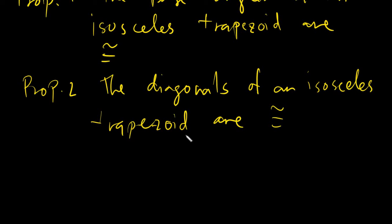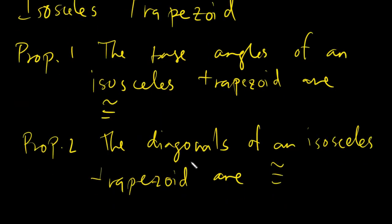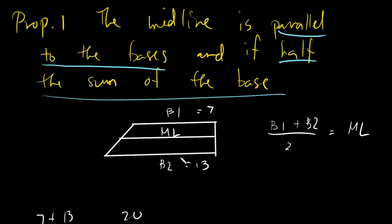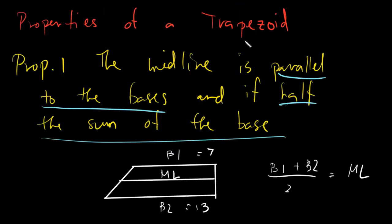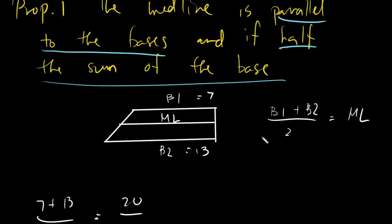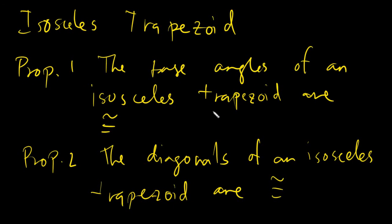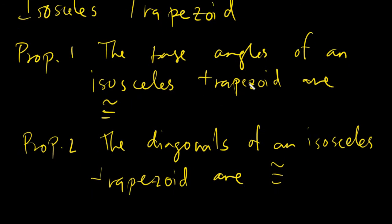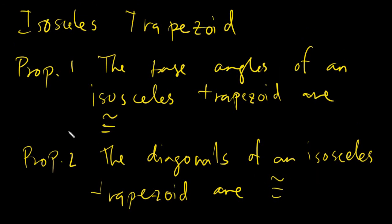So that would be all for the properties of a trapezoid. We have three properties in all. Property one is general for all trapezoids: the midline is half the sum of the bases and is always parallel to the bases. For isosceles trapezoids, we have two additional properties: the base angles are congruent, and the diagonals are congruent. If you have any questions regarding our lesson, you can view the video again or chat me in our group. Thank you everyone for listening, and assalamualaikum warahmatullahi wabarakatuh.